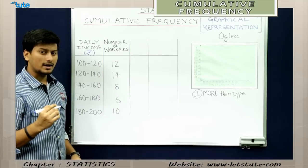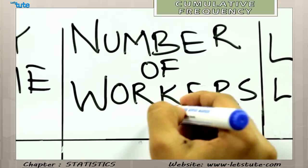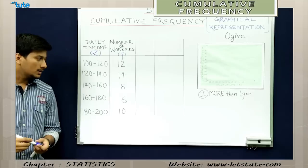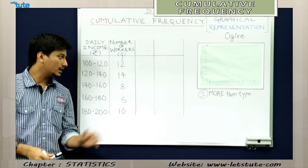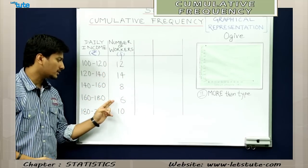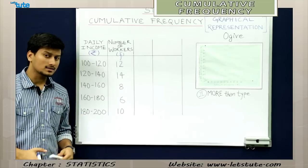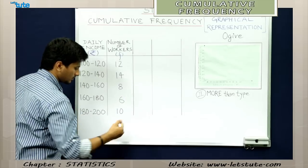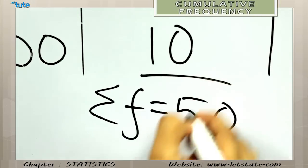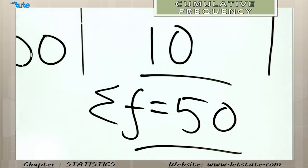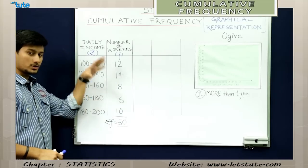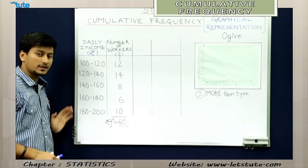Frequency is also denoted as f. Now we will add all the frequencies: 12 plus 14 plus 8 plus 6 plus 10 gives us 50. So total frequency, denoted as sigma f, is 50.